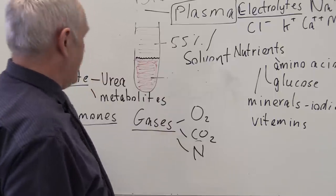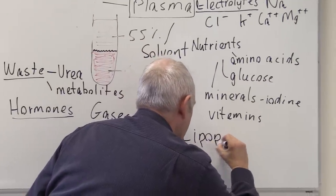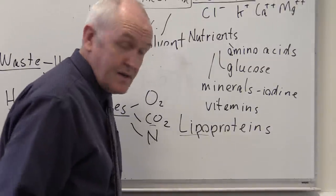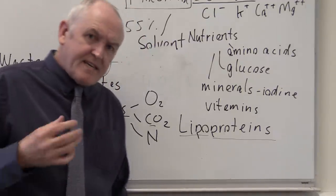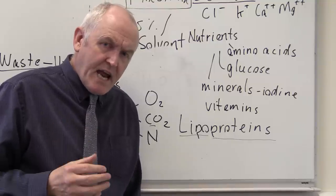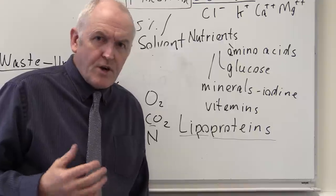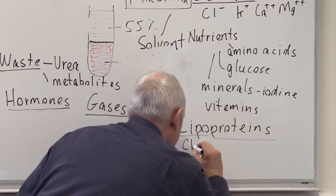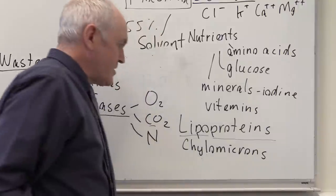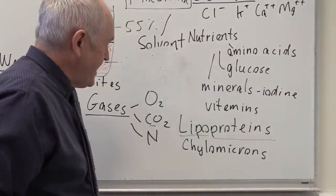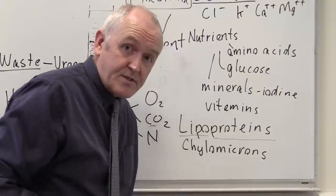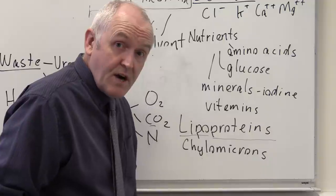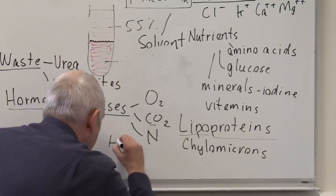The last thing to discuss are the lipoproteins — lipo meaning lipid, combined with protein. Fats cannot dissolve directly in the plasma, so they need to be carried by carrier molecules. From the gut, fats are absorbed into the lymphatic system in the form of chylomicrons. These go through the lymphatic system, enter the venous circulation, and circulate as chylomicrons — proteins packaging up fatty molecules for transport in the blood.